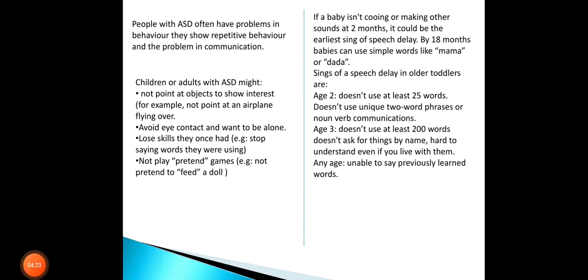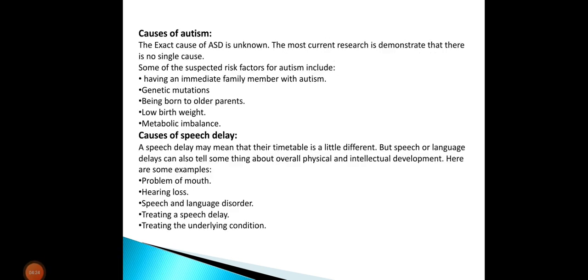Next, there are some causes of autism. The exact cause of ASD is unknown. The most current research demonstrates that there is no single cause. Some of the suspected risk factors for autism include having an immediate family member with autism, genetic mutations, being born to older parents, low birth weight, and metabolic imbalance.